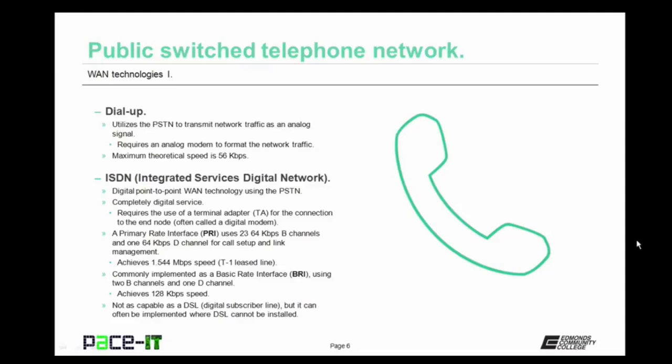Then there's ISDN — Integrated Service Digital Network. ISDN is a digital point-to-point WAN technology that utilizes the PSTN. It's a completely digital service that requires the use of a terminal adapter, or TA, to make the connection to the end nodes. This TA is often called a digital modem, but it's not — it's a terminal adapter. ISDN can use a primary rate interface, or PRI. The PRI is composed of 23 64-kilobits-per-second B channels and one 64-kilobits-per-second D channel, used for call setup and link management.